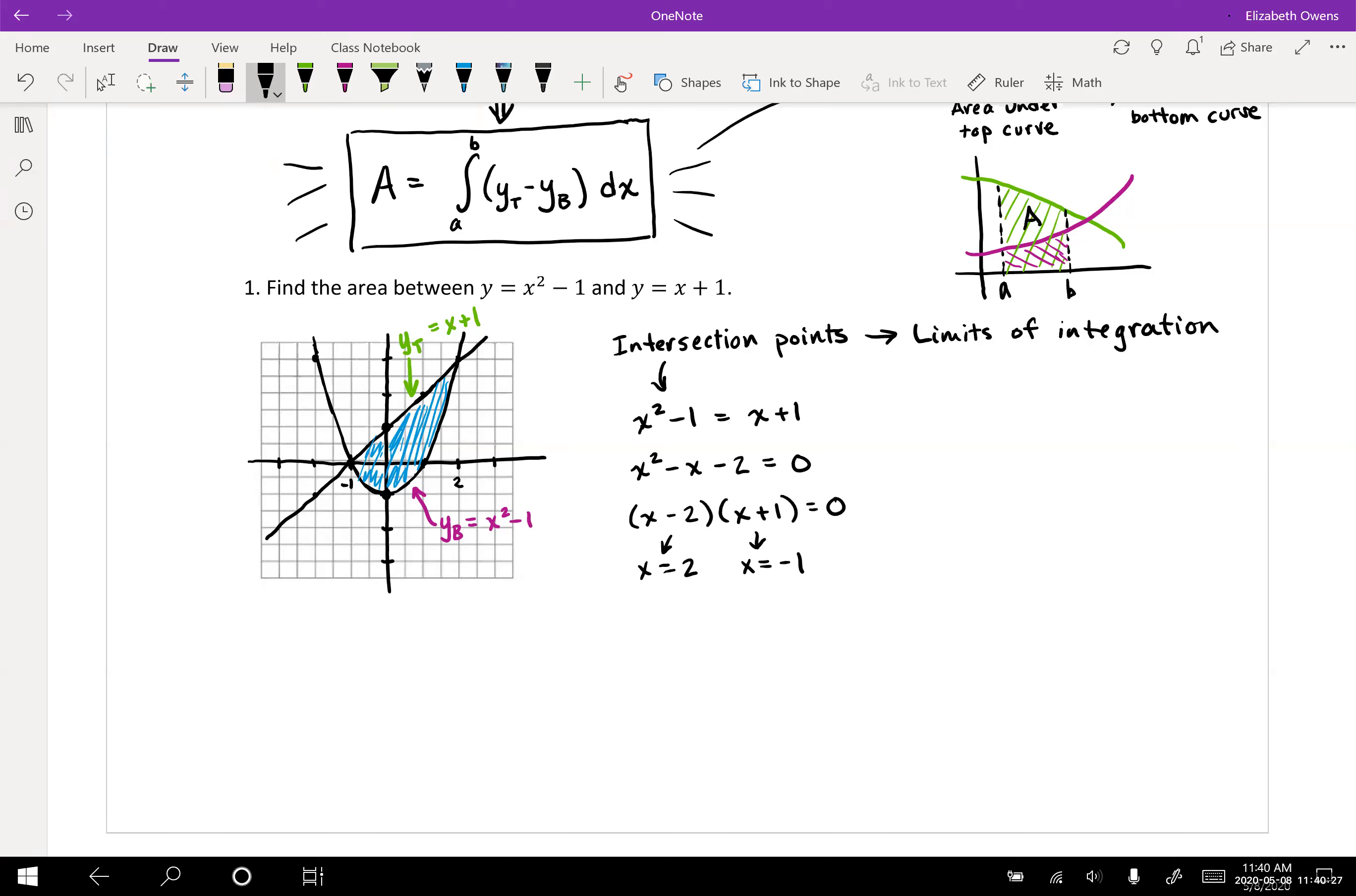To get our area, we're going to integrate from negative one to positive two and take our top function x plus one minus our bottom function x squared minus one and integrate that with respect to x. There's the integral setup, and if we can get to that integral setup, the integral after this is not too terrible.